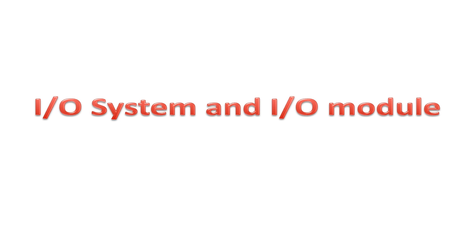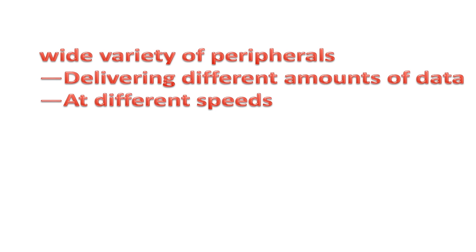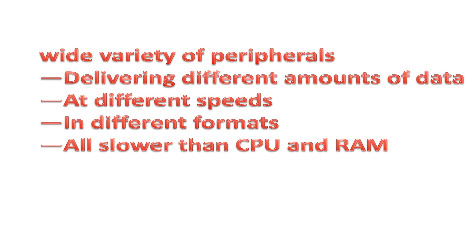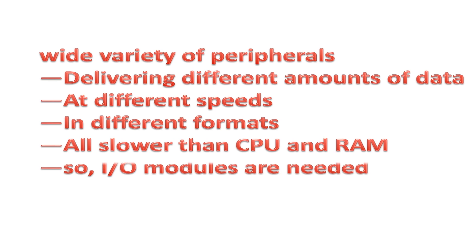Hello everyone, let us discuss input-output system in detail. A variety of peripherals delivers different amounts of data at variable speeds and in various different formats to the computer. These peripherals might be connected directly or via expansion buses to the computer system. Most of the peripherals are slower than the processing unit and memory units, and data formats and word lengths of the peripherals may also vary from the processing unit. We need some model to handle the communication of the processor with the peripherals. This is also called the input-output model.